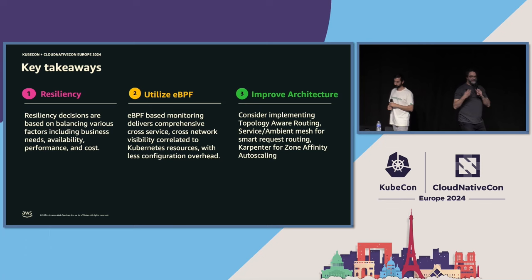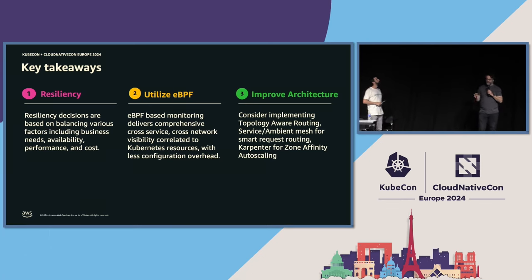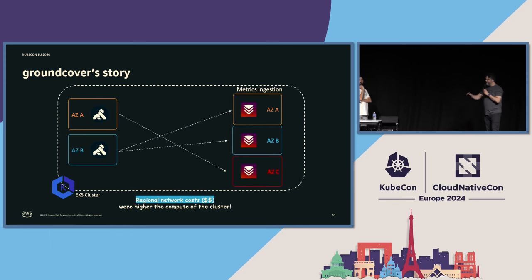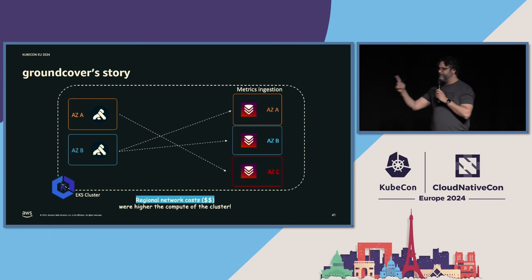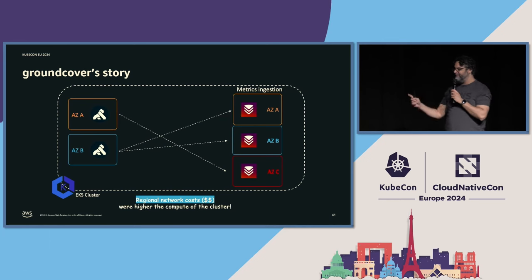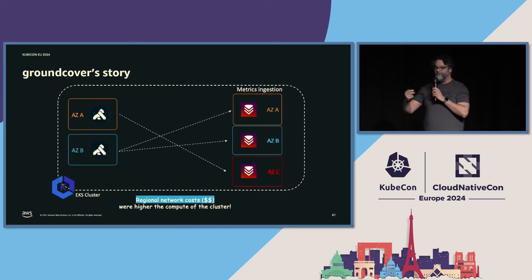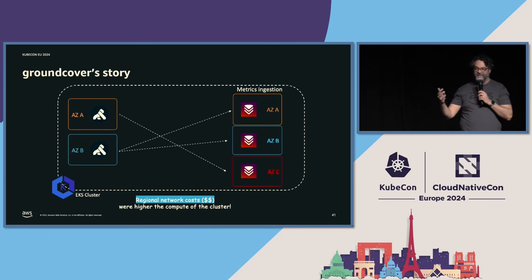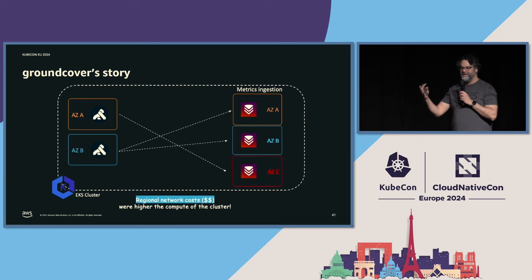I appreciate that story because I see a lot of customers who think they know how they designed their architecture — they've deployed services, set up load balancers, and believe they're resilient. But when you really dig in, you find out 'I didn't know this service was talking to this' or 'I didn't know this was configured from AZ-A to AZ-C.' They thought they were building with resiliency in mind but were sending traffic to the same zone, so if that zone went down there was no resiliency. You need something to validate whether your assumptions about cross-AZ architecture are actually true.